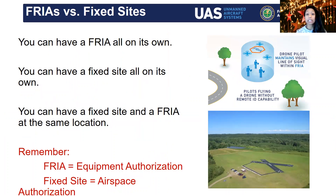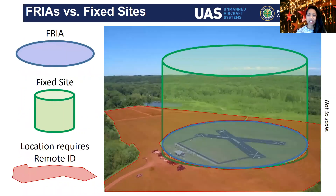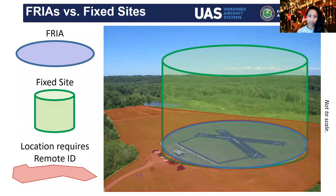You can have FRIAs completely on their own, and you can have fixed flying sites on their own. You can also have them together — a fixed flying site on top of a FRIA. The illustration shows the big green cylinder as your fixed flying site — three-dimensional — with a little blue circle below representing your FRIA, just that border on the ground. Anything outside of that FRIA border will require Remote ID.